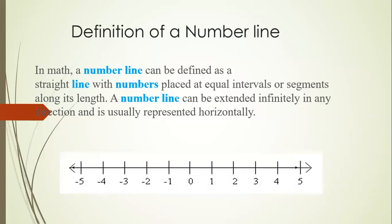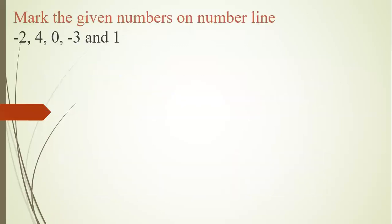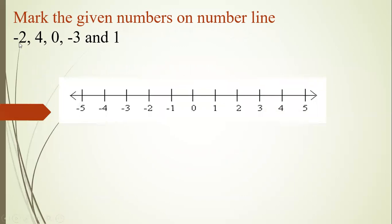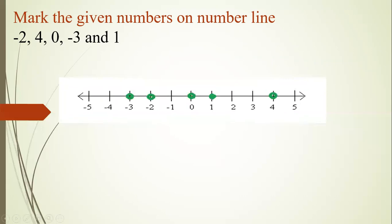Next, let's mark the given numbers on the number line. We have: minus two, four, zero, minus three, and one. On our number line, minus two is here, so we color this section; four is here, so we color this section. Similarly, we color all these points on the number line.